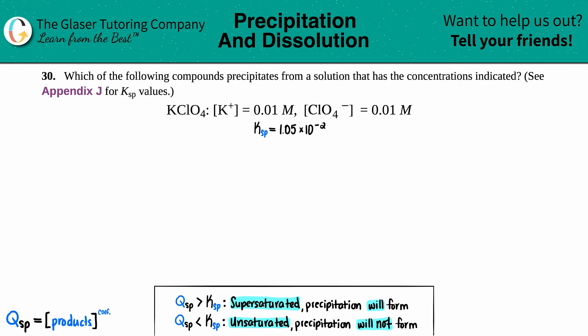Number 30, which of the following compounds precipitates from a solution that has the concentrations indicated? And then see Appendix J for Ksp values.